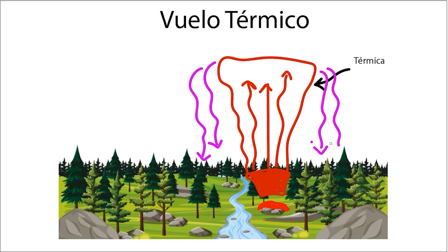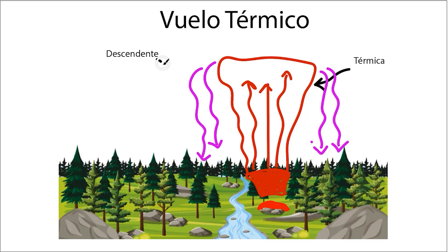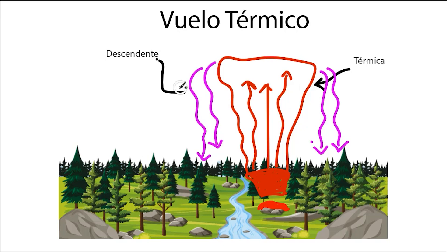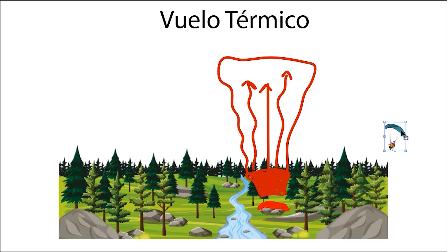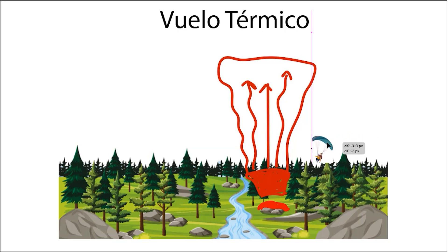Sometimes, while flying, we first encounter sink. This isn't necessarily bad, because if we keep moving forward, we may find the lift we are searching for — the thermal. We continue flying, and suddenly we start gaining altitude. This is a sign that we might be in a thermal. To take full advantage of it, we must make 360-degree turns inside it. This is known as coring a thermal.